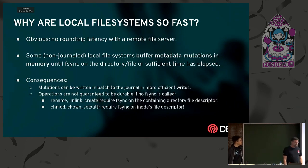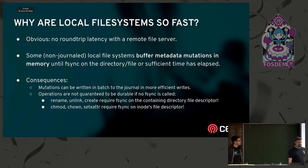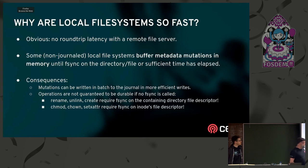Why are local file systems so much faster? Well, obviously they don't have a server to talk to — they don't have to make this long round trip. There are also some non-journal file systems that buffer their metadata mutations in memory, like ext2. Not so much in use these days. But in most journal file systems, the journal's pretty quick, so we don't tend to worry too much about the fact that we have to journal all this data for crash recovery.